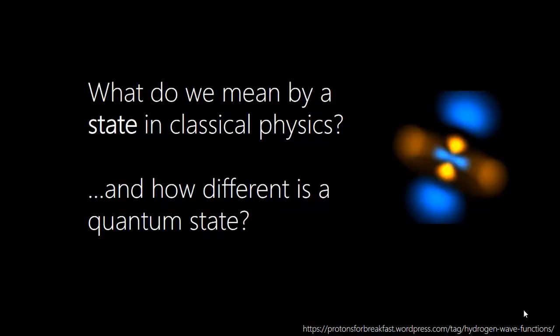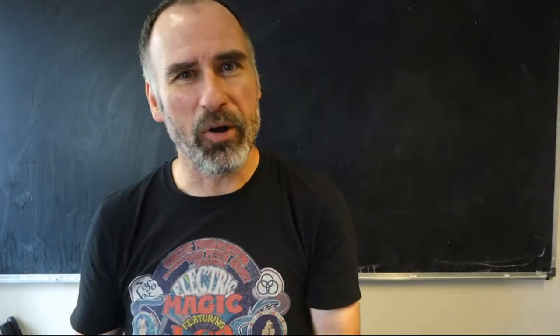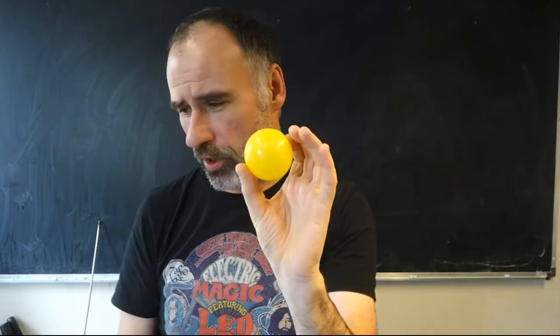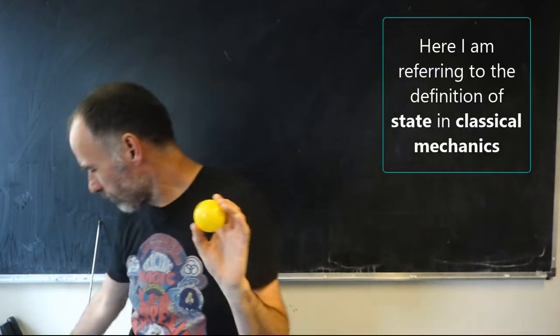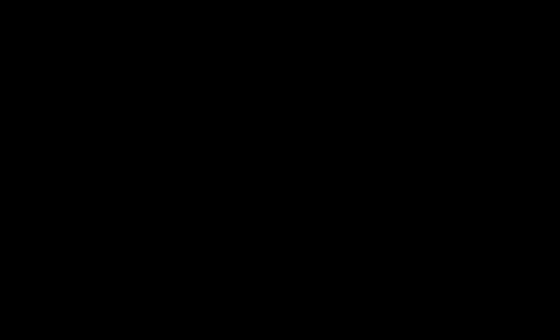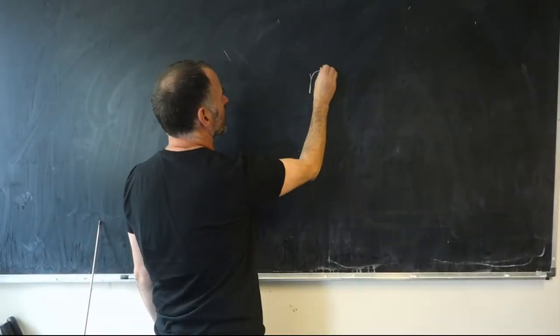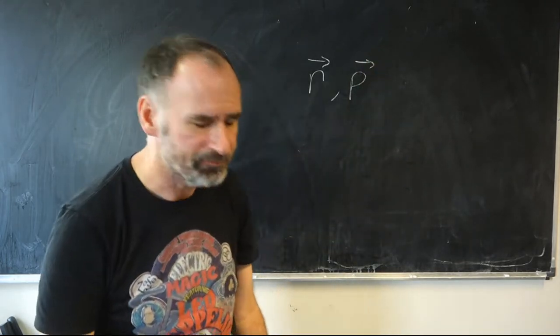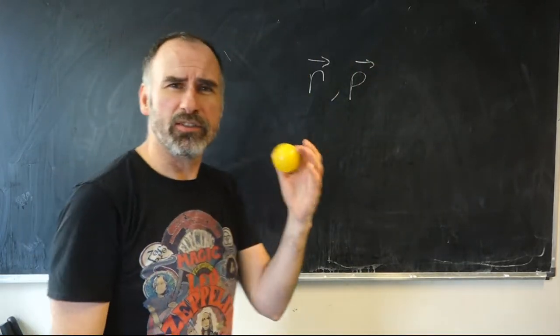What do we mean by a state in classical physics and how different is a quantum state from a classical state? Let's think about simple particles — purely classical particles. The way we define the state of a particle, or an object or a system, is in terms of its position and its momentum: a position vector and a momentum vector. Of course, momentum is a vector. We can make this more straightforward.